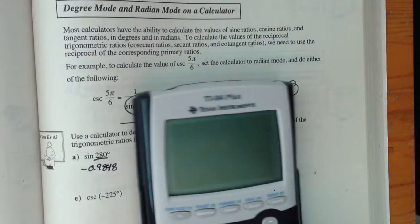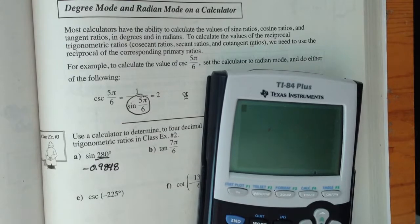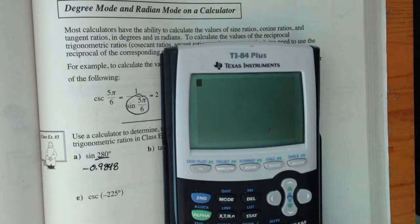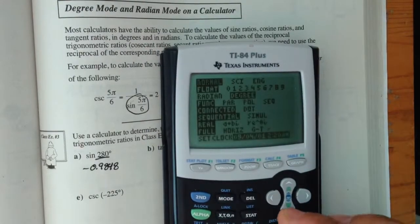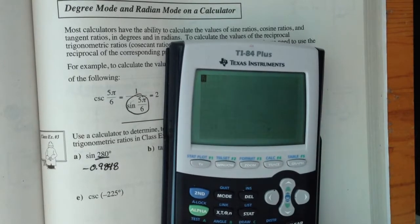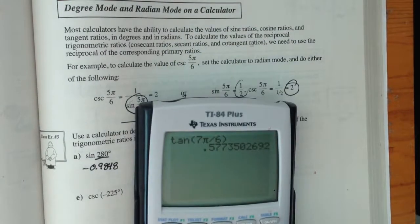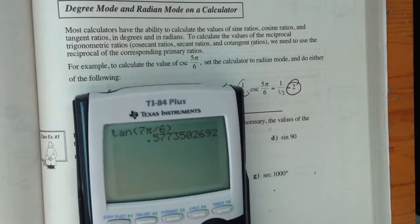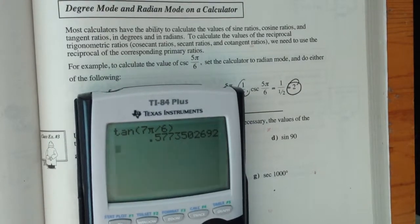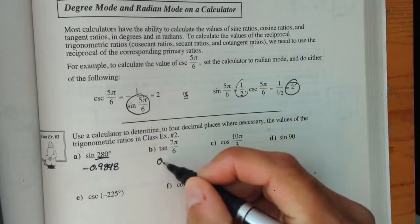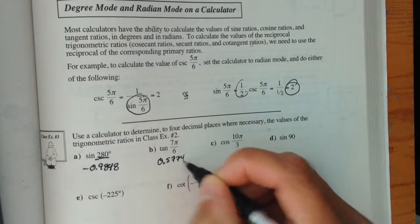Now, the next one we're looking at is tangent 7π over 6. We're in radians here, so back to radian mode. It's tangent 7π over 6, and I get an answer of 0.5773, or 0.5774.